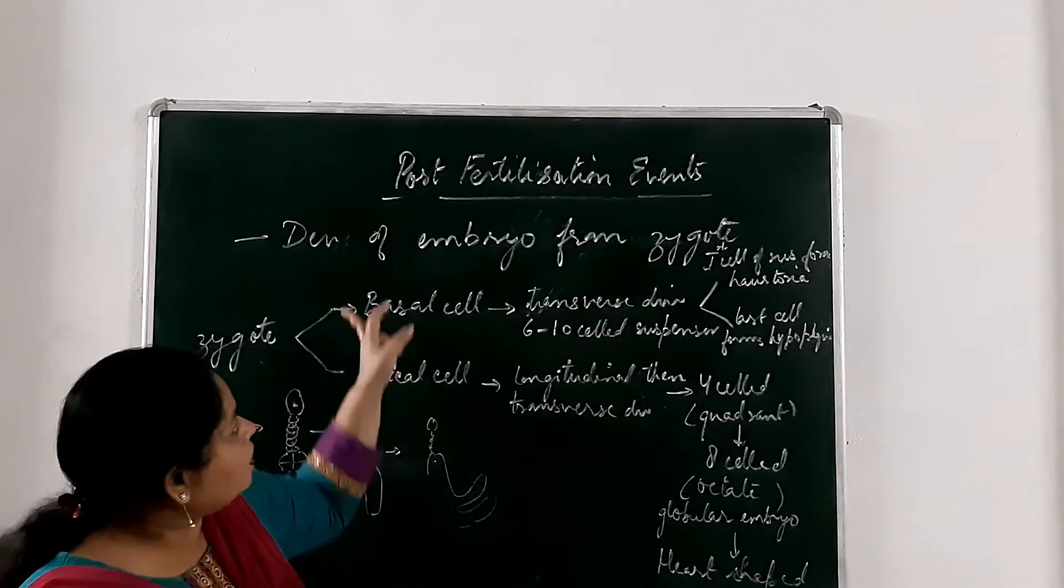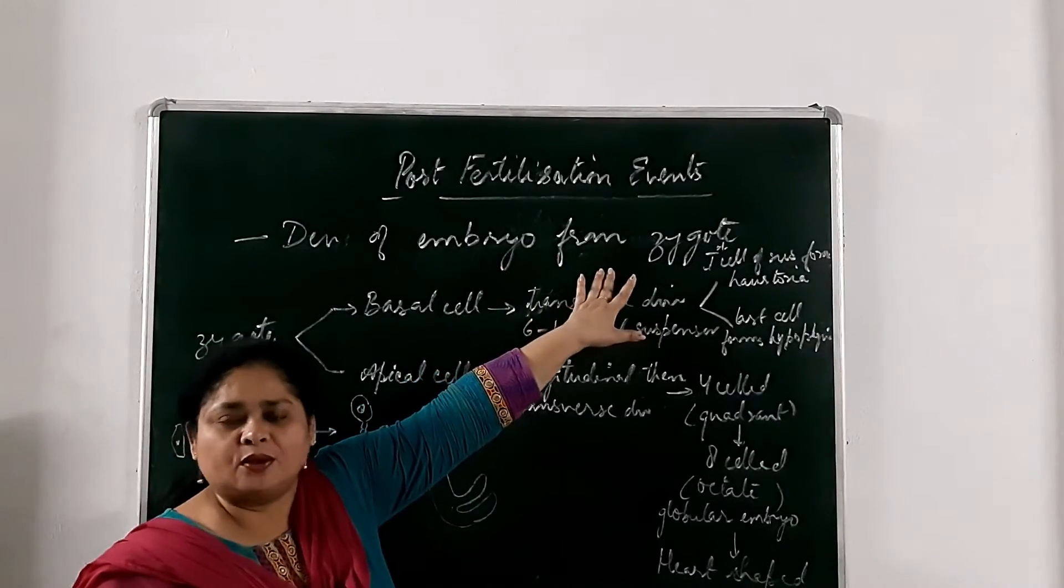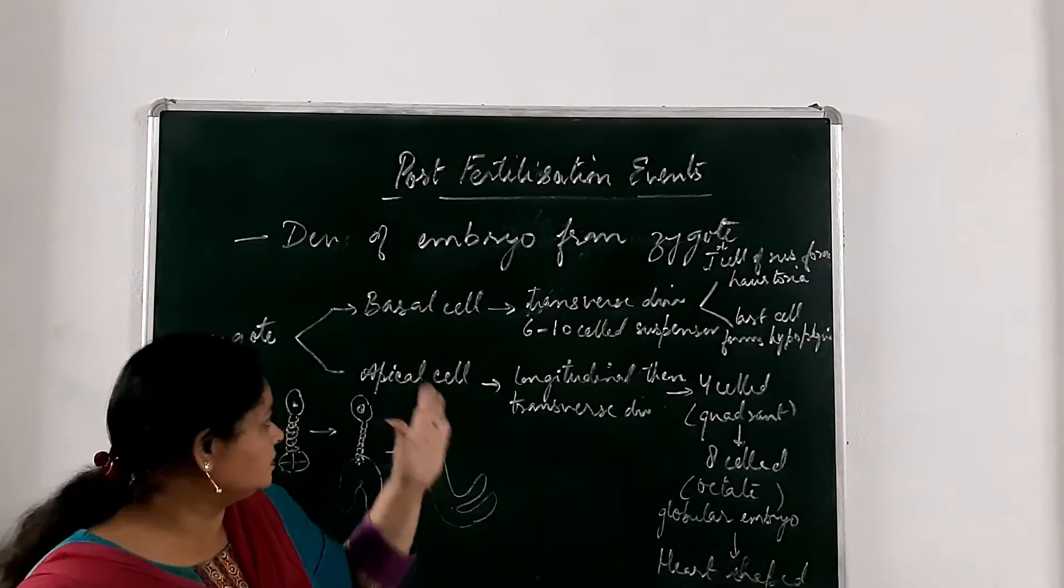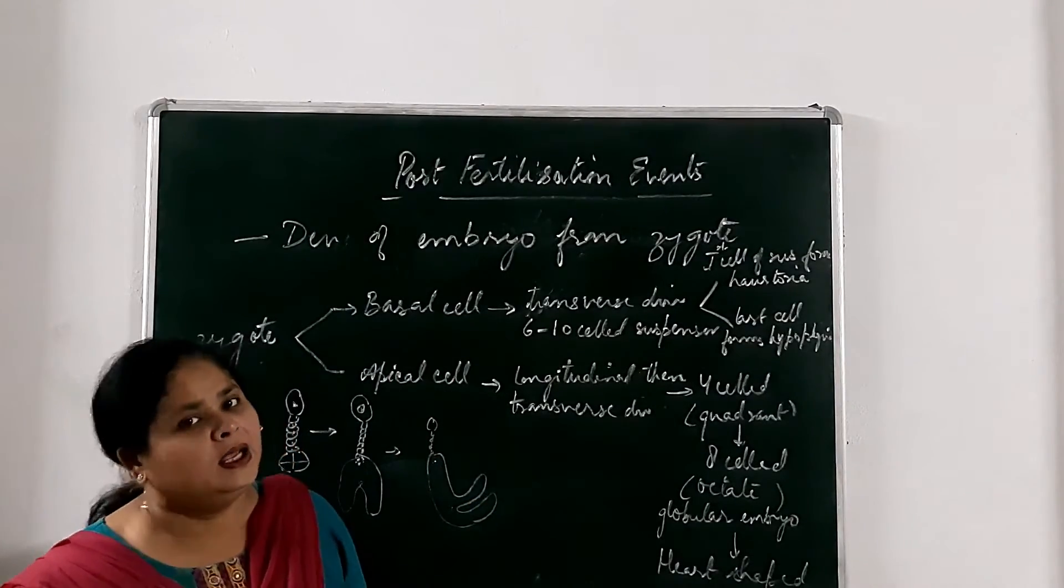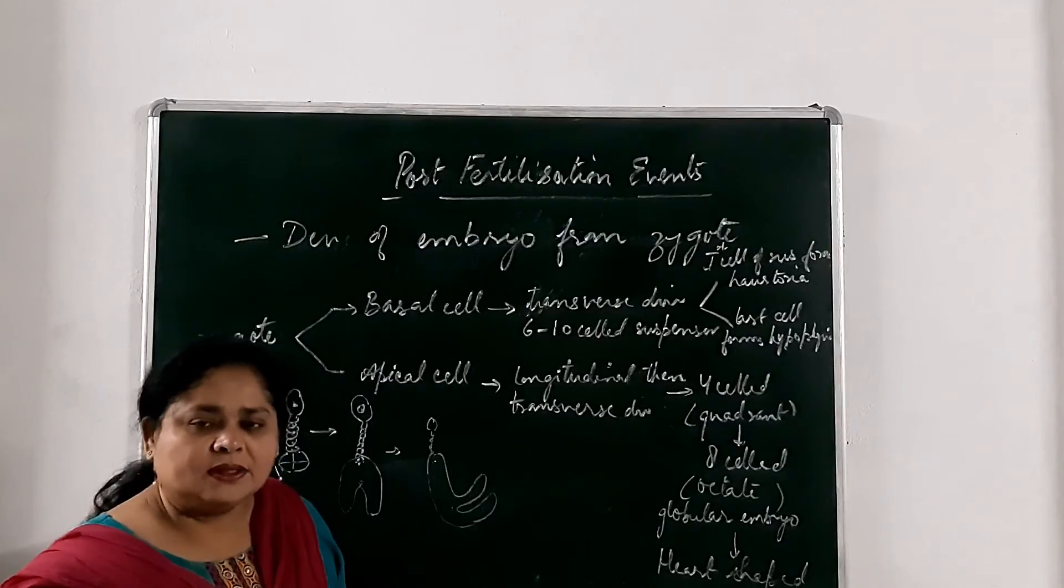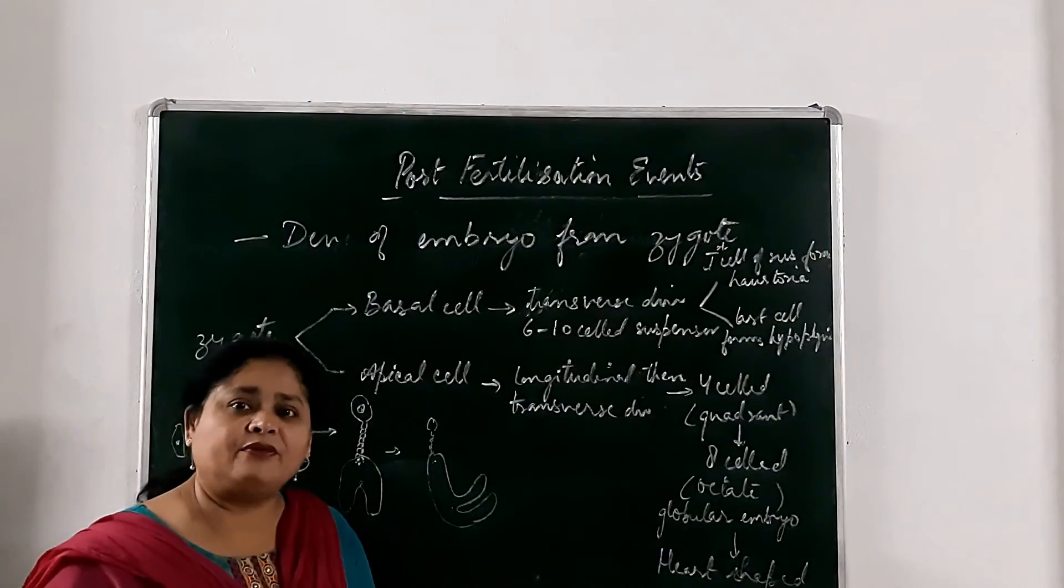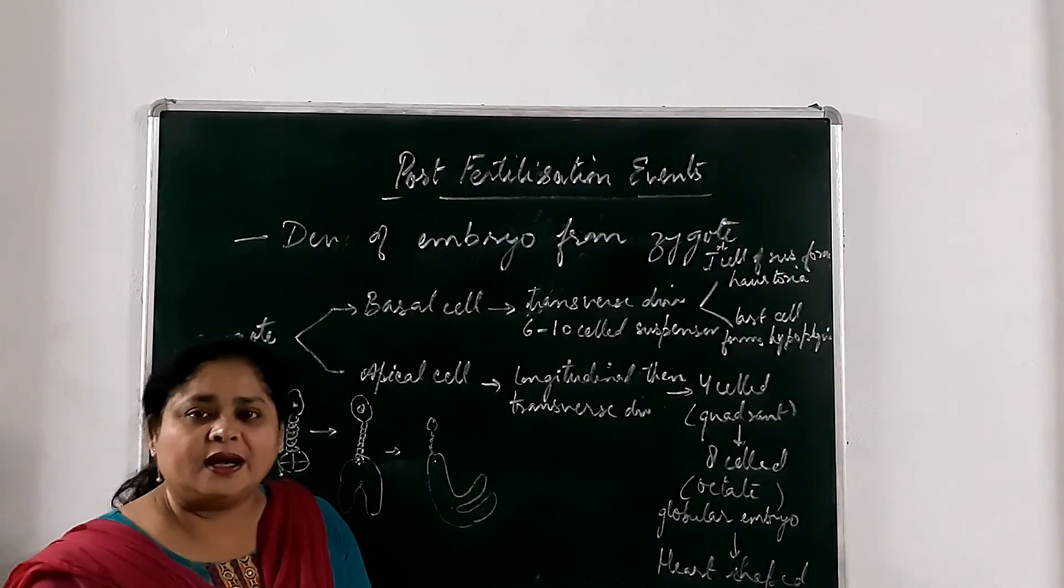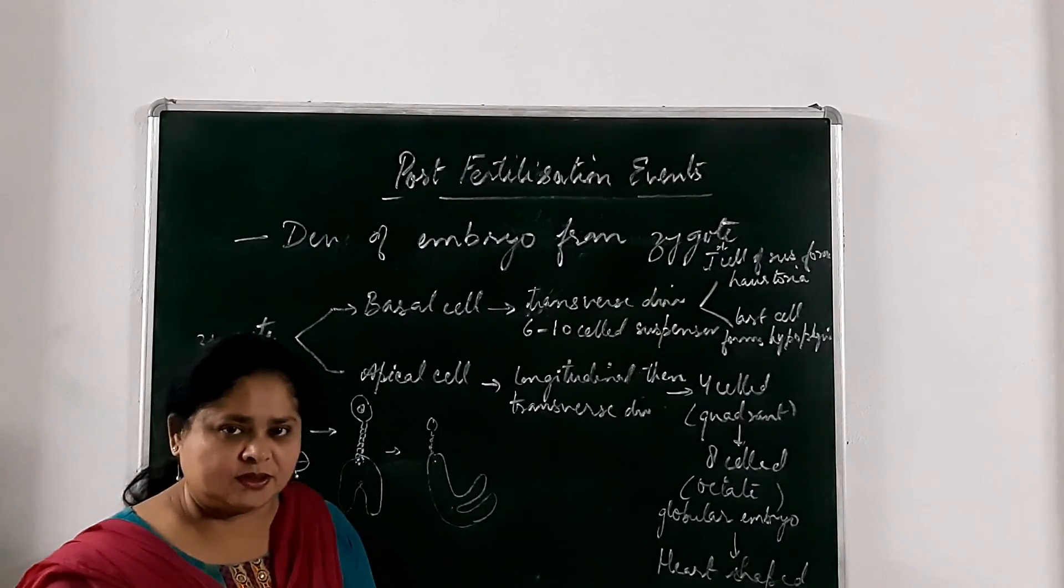So this is all about the embryo development from the zygote. So the early stages of the embryo development are similar in monocot and in dicot. Now the seed is formed because seed consists of endosperm plus the embryo inside it. Now here are different parts of the seeds which we will discuss in the next session. Thank you.